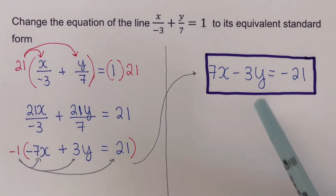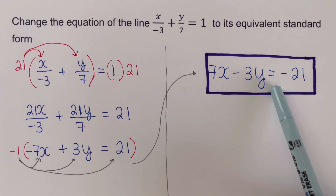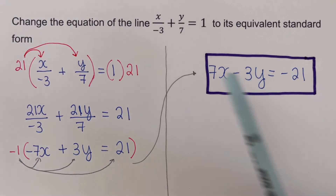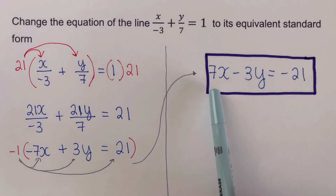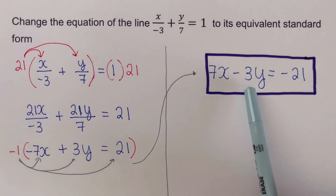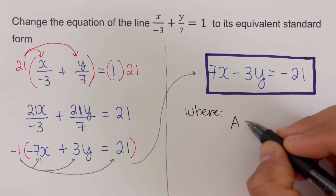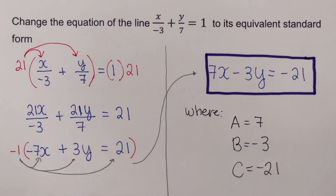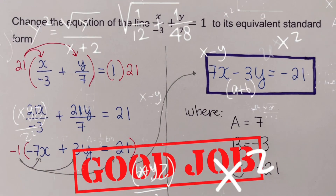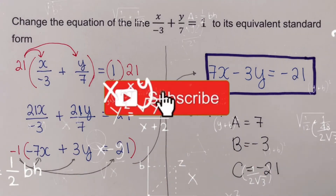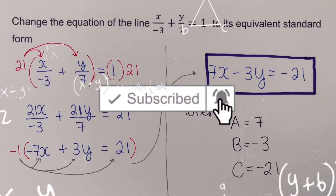This is the equivalent standard form of the two-intercepts form equation, where a is seven, b is negative three, and c is negative 21. Did you get the same answers? Good — if you find this video helpful, hit like and subscribe for more math videos. See ya!